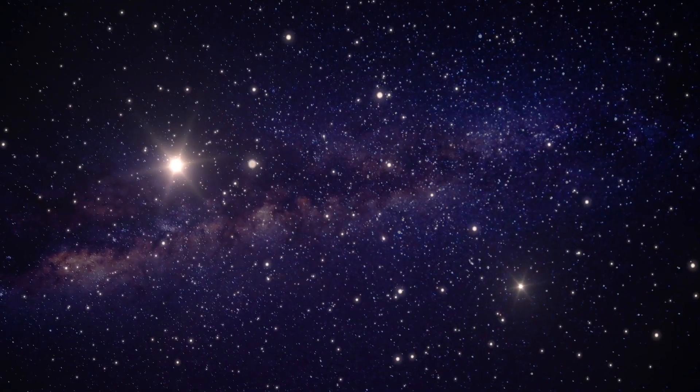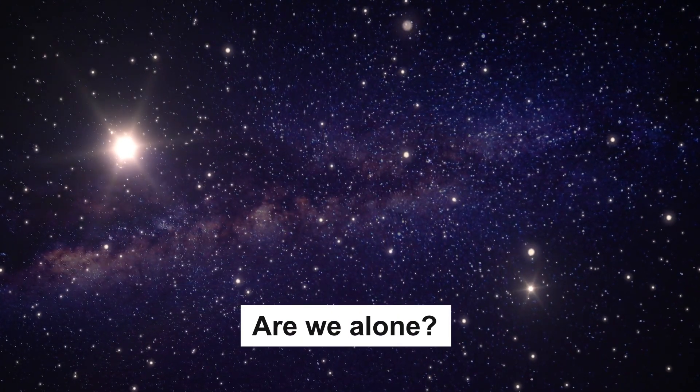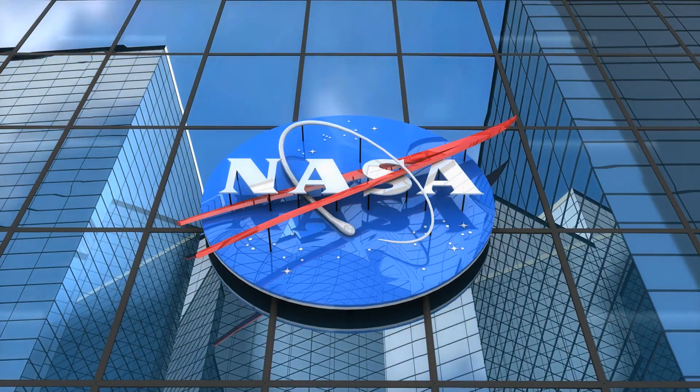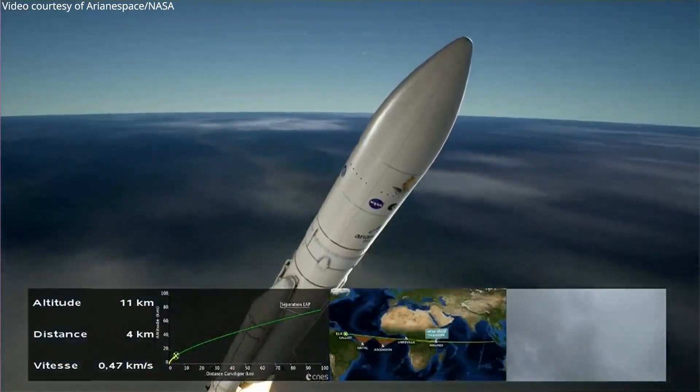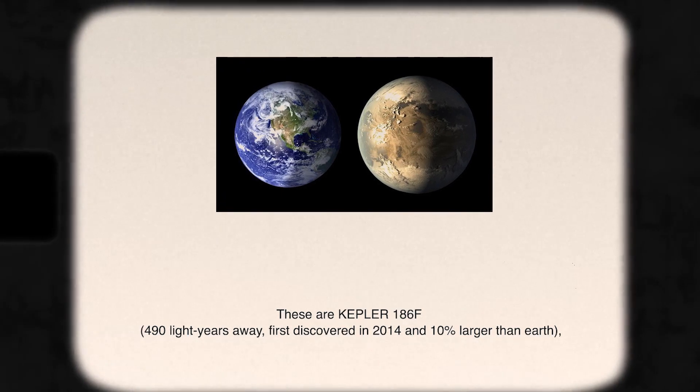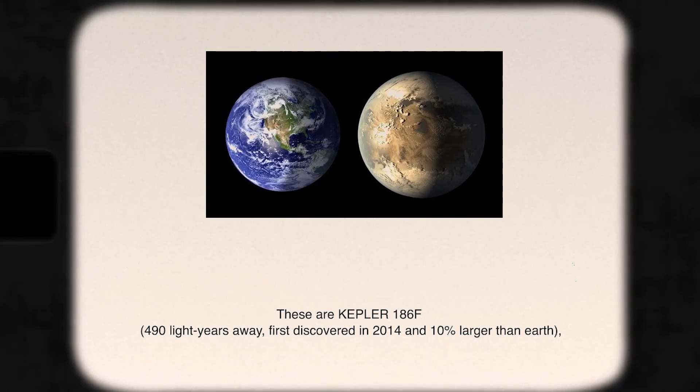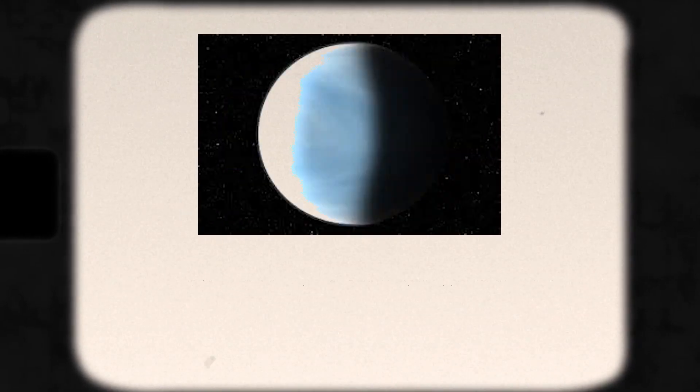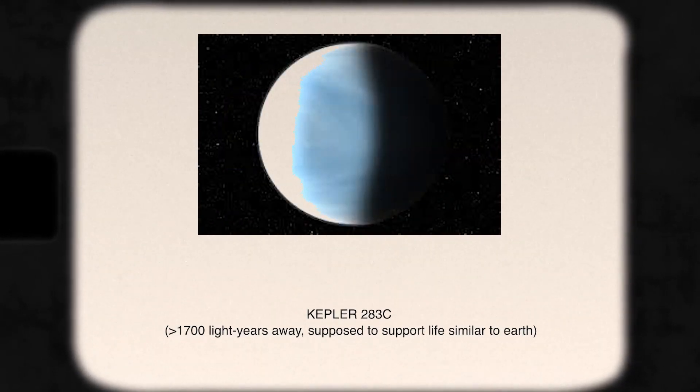The other curious thing everyone wants to know is whether or not we are alone in the whole universe. NASA has listed some of the most favorable planets that can host life. Let's dive deep into these celestial bodies that NASA chose to investigate with JWST. These are Kepler 186F, 490 light-years away, first discovered in 2014 and 10% larger than Earth. Kepler 283C less than 1,700 light-years away, supposed to support life similar to Earth.